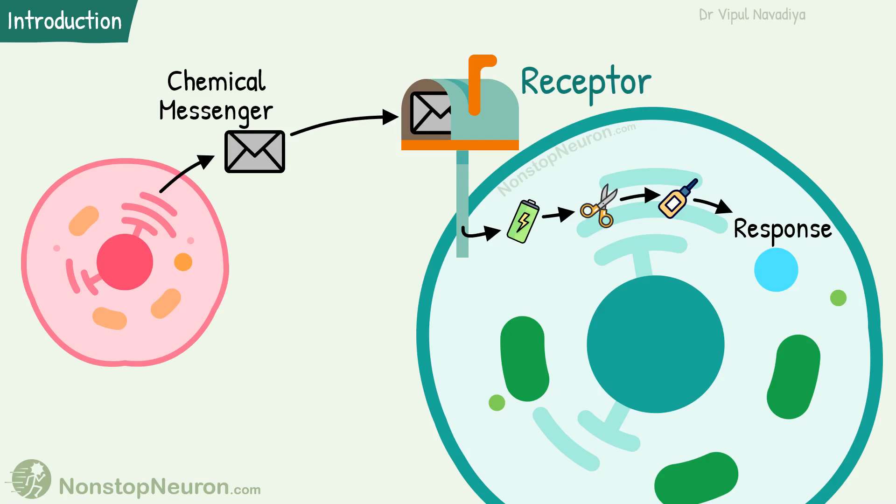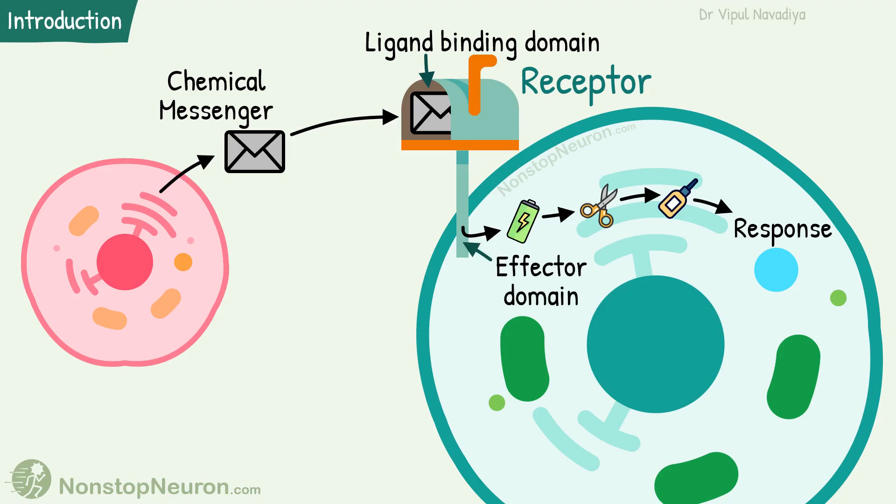Accordingly, receptors have two domains: a ligand binding domain that recognizes a specific ligand molecule, and an effector domain that undergoes conformational changes that produce some downstream effect. This is the general theme with all the receptors.